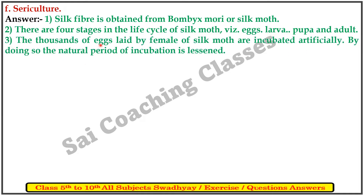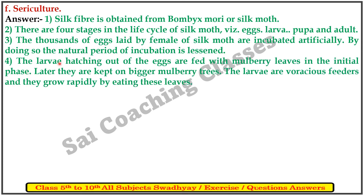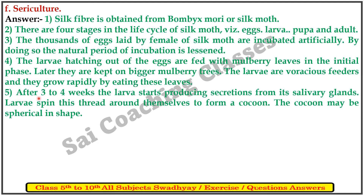The thousands of eggs laid by female silk moths are incubated artificially, which lessens the natural period of incubation. The larvae hatching out of the eggs are fed with mulberry leaves in the initial phase. Later, they may be kept on bigger mulberry trees. The larvae are voracious feeders and grow rapidly by eating these leaves. After 3-4 weeks, the larvae start producing secretions from salivary glands and spin a thread around themselves to form a cocoon.